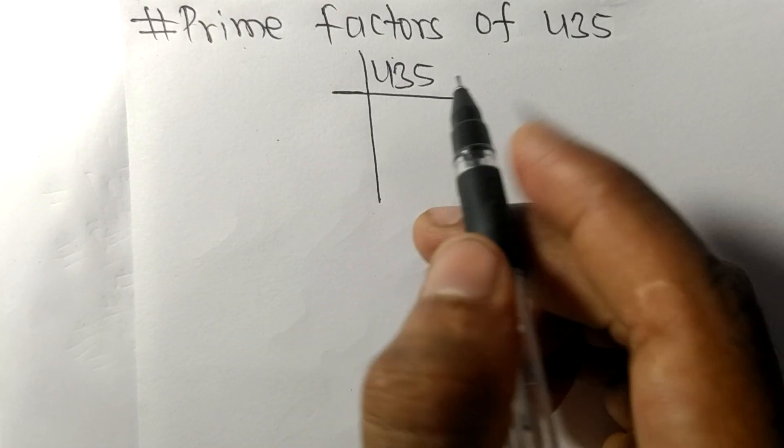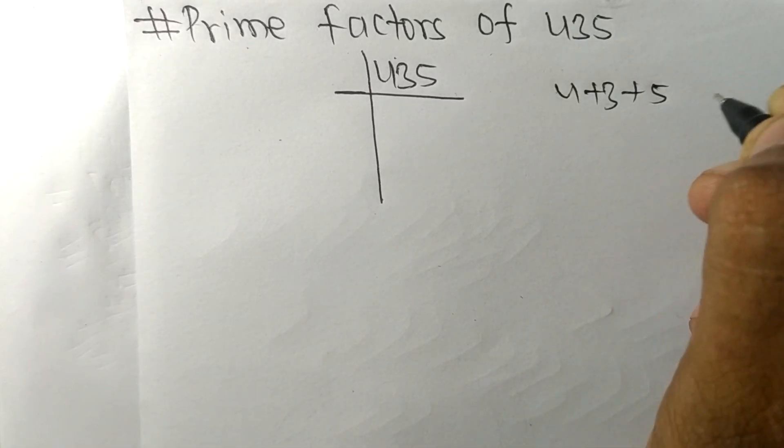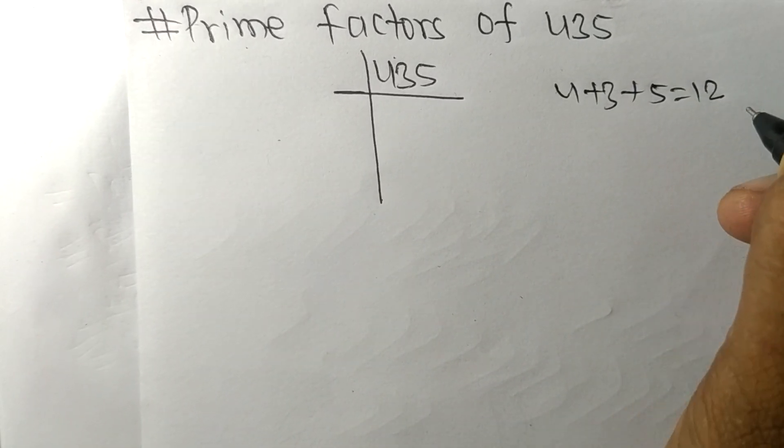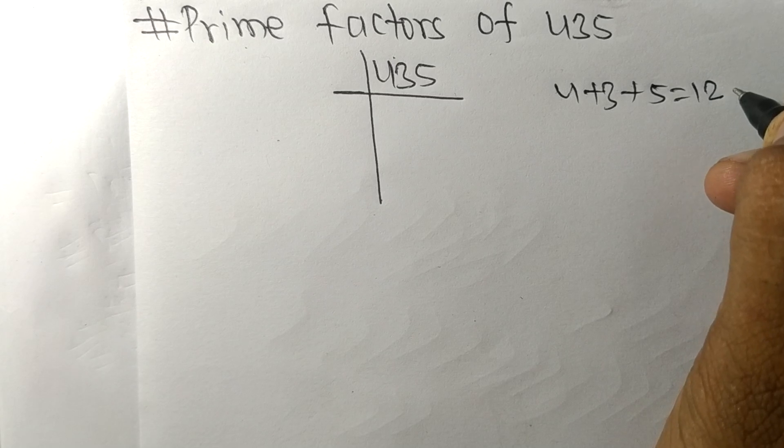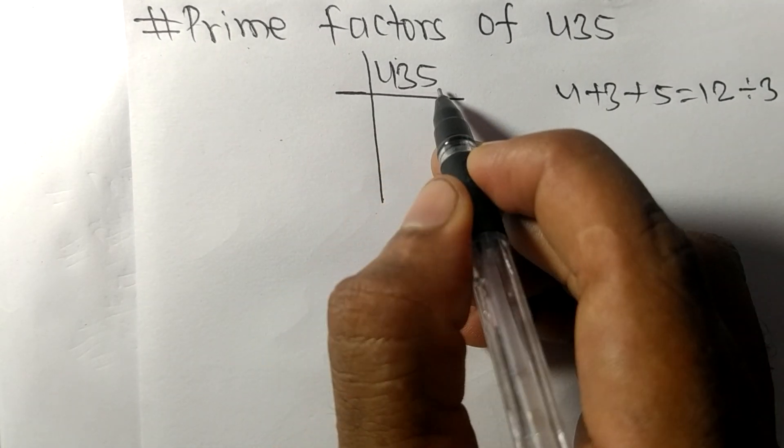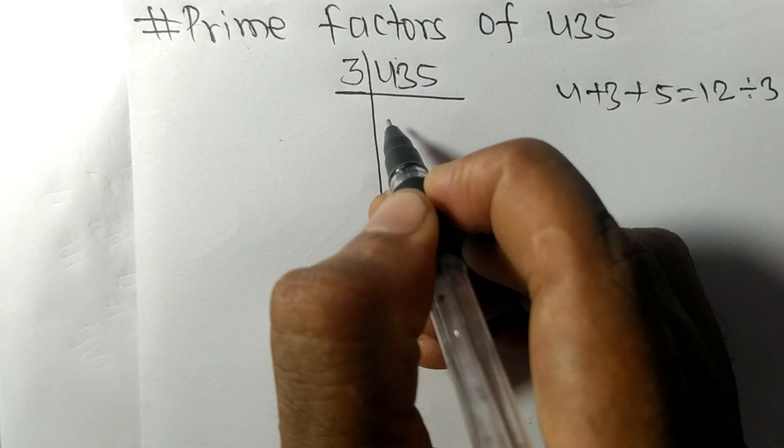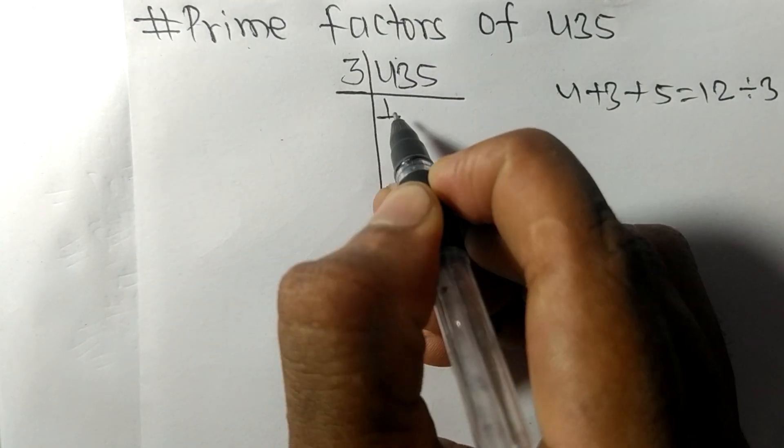When we add all these numbers, that is 4 plus 3 plus 5, then we get 12, and 12 is exactly divisible by 3. So these all numbers are also divisible by 3.